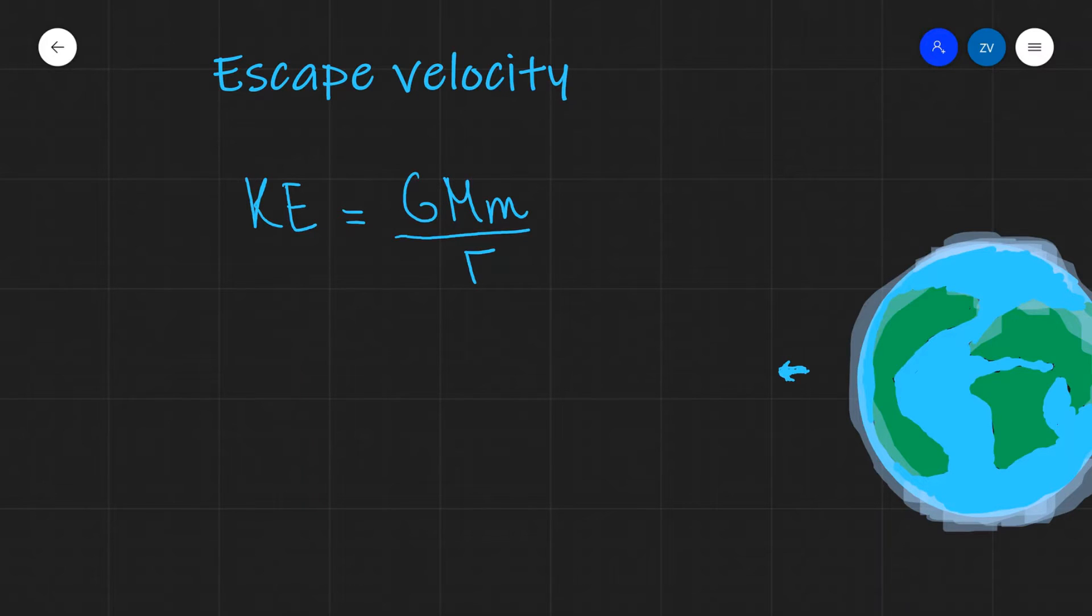We can calculate the escape velocity for planet Earth. All we need to do is set the gravitational potential energy equal to the kinetic energy. Let's do this.